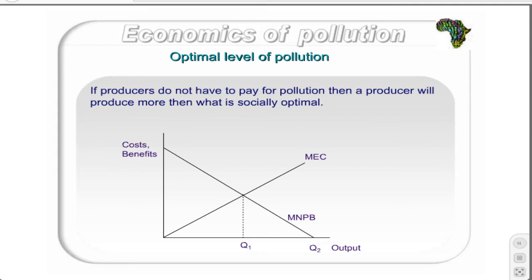The figure shows the marginal net private benefit (MNPB) derived by producers — that is, the additional benefit derived from producing an additional unit of output — as well as the marginal externality cost (MEC), which is the additional externality cost from the production of an additional unit of output. The optimal level of output from the perspective of the producers is Q2, where MNPB is equal to zero, meaning they are maximizing their profit. The optimal level of output from the perspective of society is Q1, where MNPB is equal to MEC, and producers take account of the pollution cost to society.